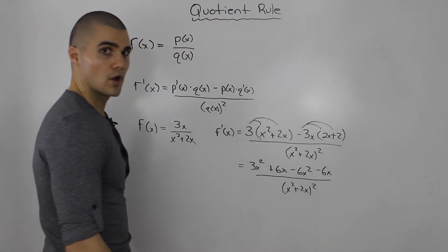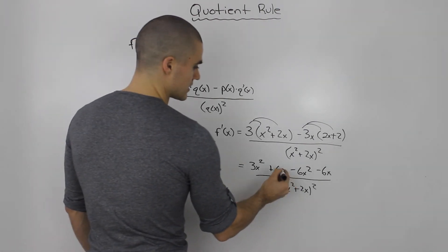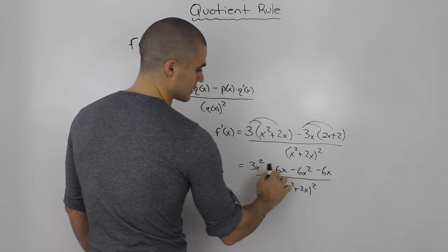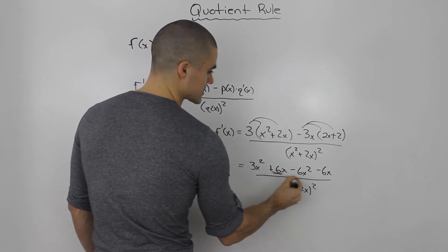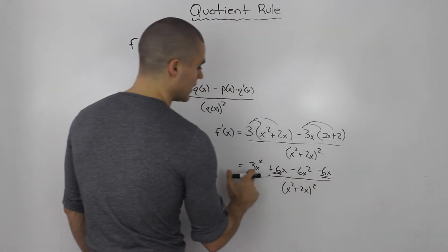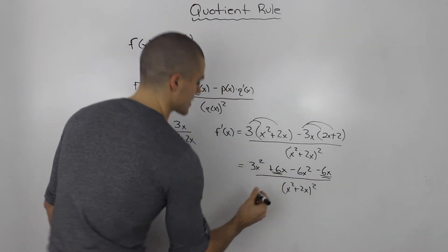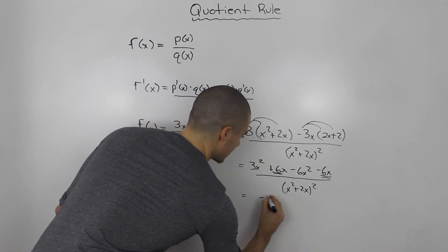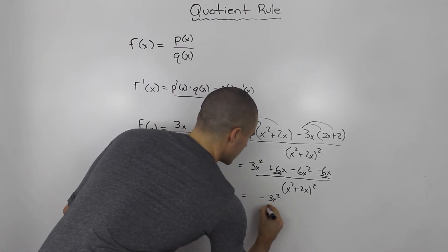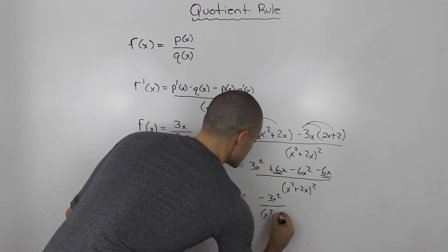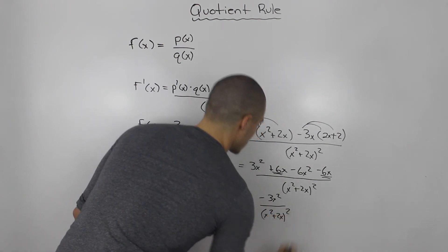Notice how the 6x terms cancel out - they're like terms. 6x minus 6x is zero, and 3x² minus 6x² is -3x². This is all over (x² + 2x)².